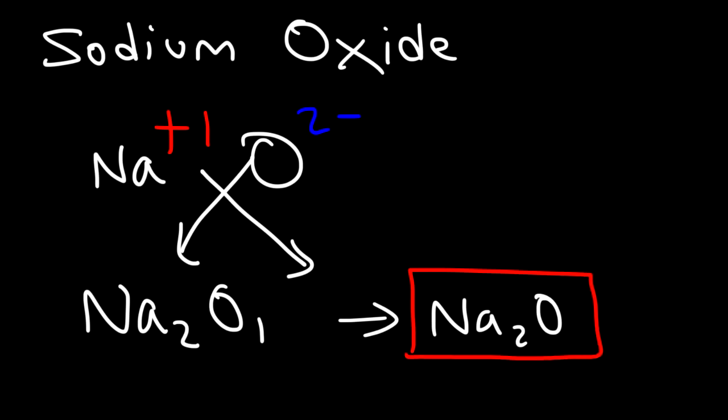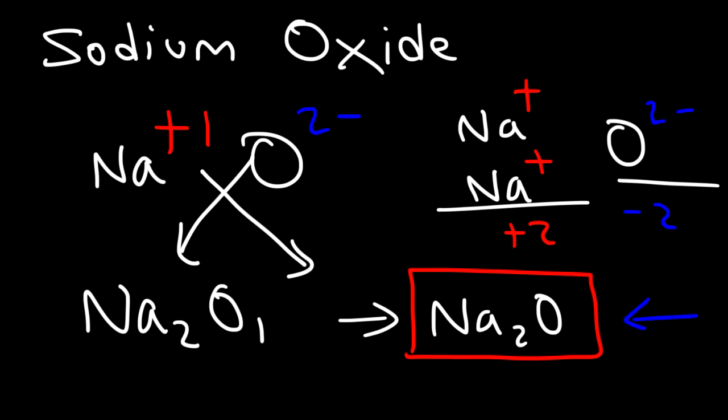This means that we need 2 sodium cations to neutralize the oxide ion. The total of all the positive charges will be plus 2, and the total of all the negative charges is minus 2. So that's why we need 2 sodium cations to balance the negative 2 charge on the oxygen. And so this is the answer, Na2O.